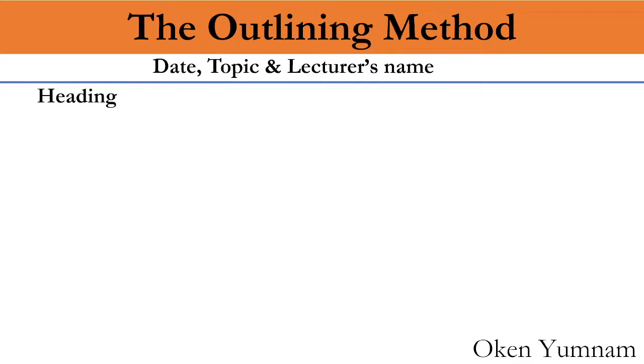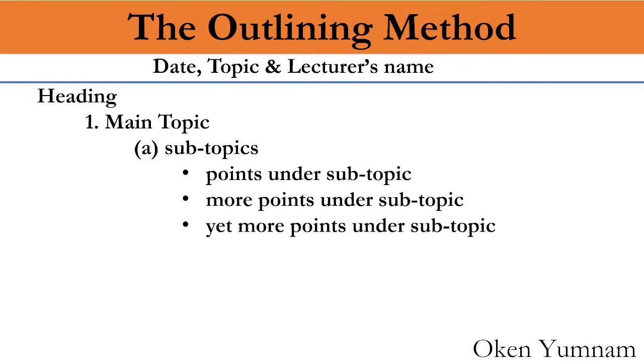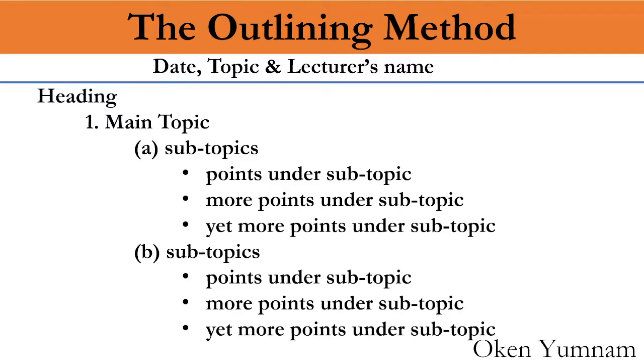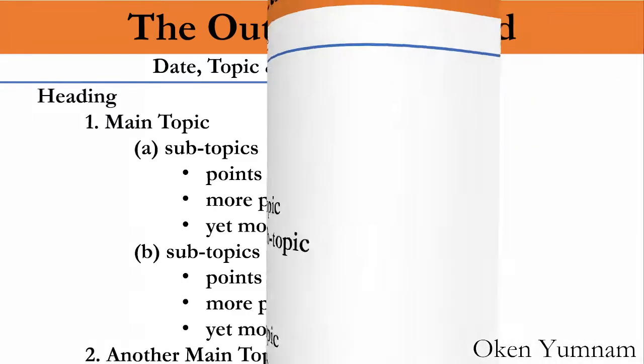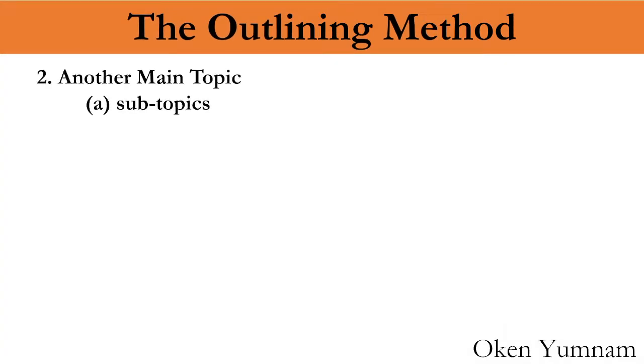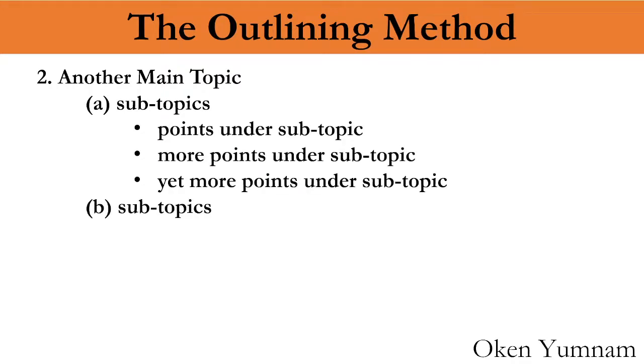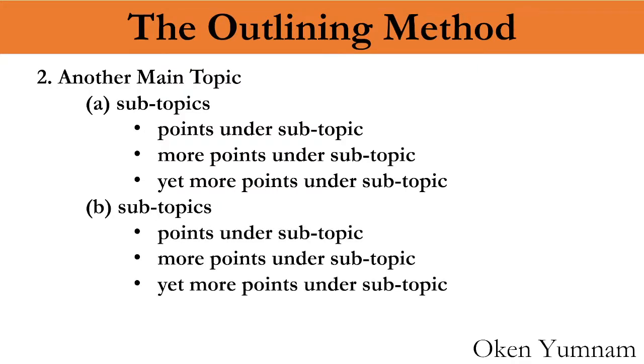In the outlining method, we draw a line here. At the top we write the date, topic, and lecturer's name. First, we write the heading or main topic, which is followed by subtopics. These subtopics may have points under them, and more points, and still more points as the lecture goes on. Then another subtopic with points, more points, and still more points. Then we go to another main topic. For this main topic also we have subtopics, similarly with points, more points, and yet more points. Another subtopic comes up, and another main topic also comes up like this.